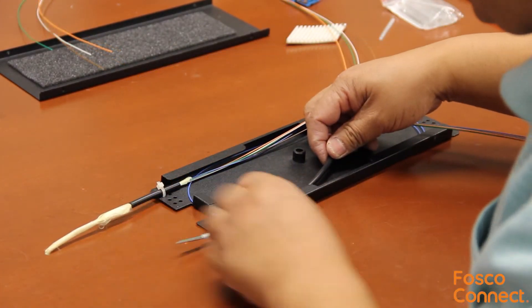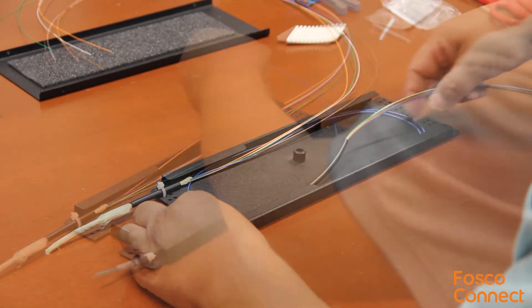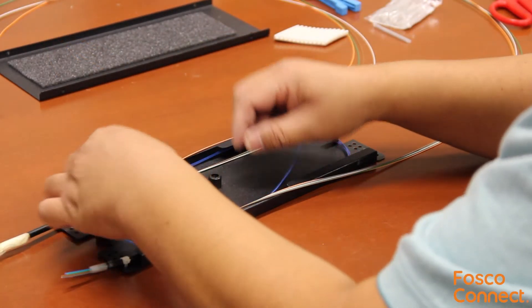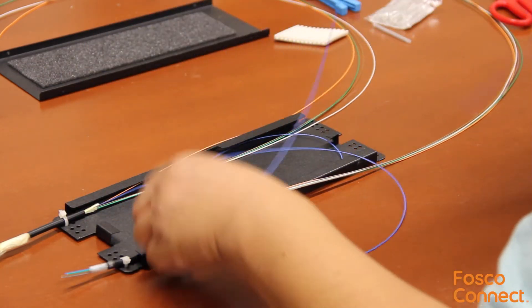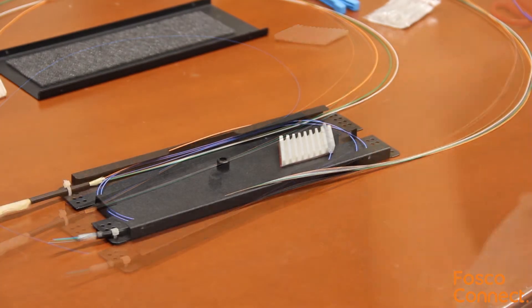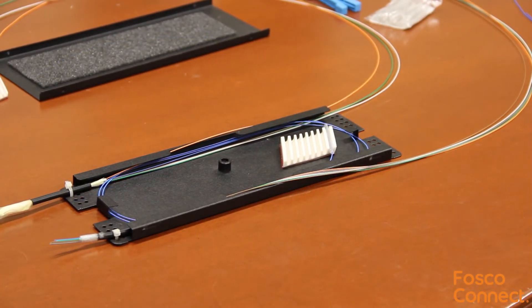We repeat the same process for the outgoing cable. Now we will fusion splice together the blue fiber of the incoming cable with the blue fiber of the outgoing cable. When the fusion splice is done, we loop the fiber back into the tray. We then do the same for all the fibers.